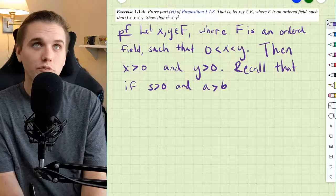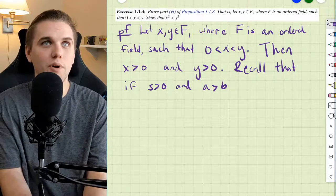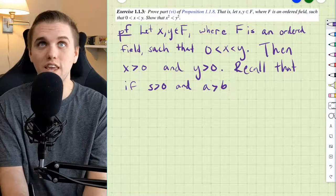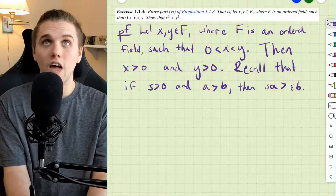Now, recall that in ordered fields, if you have a number that's greater than 0, then you can multiply that number on both sides of any inequality.